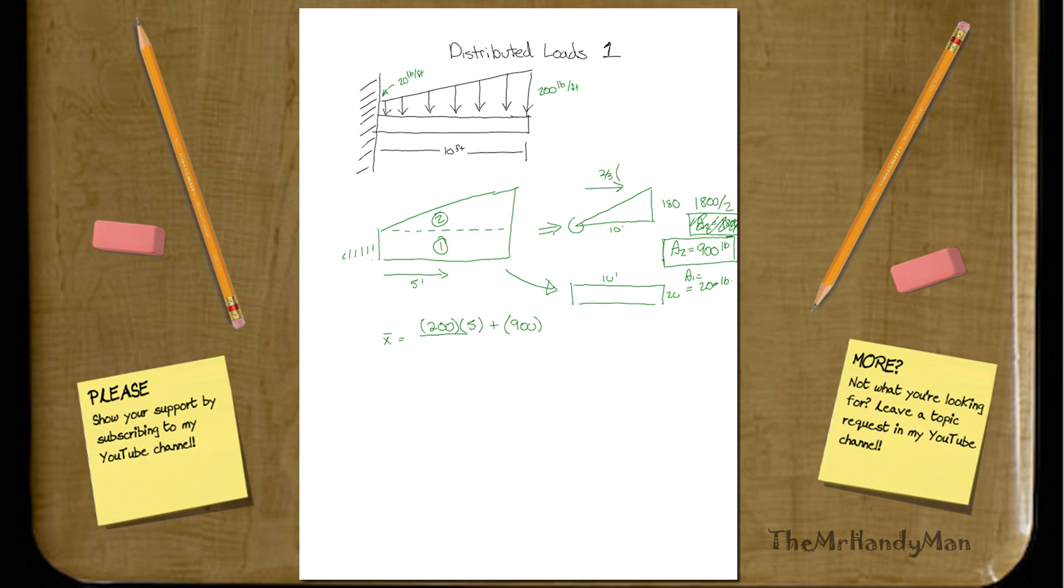2 thirds of 10 feet, you could work that out. 20 divided by 3, that's 6.67, right? All over 1,100 pounds.